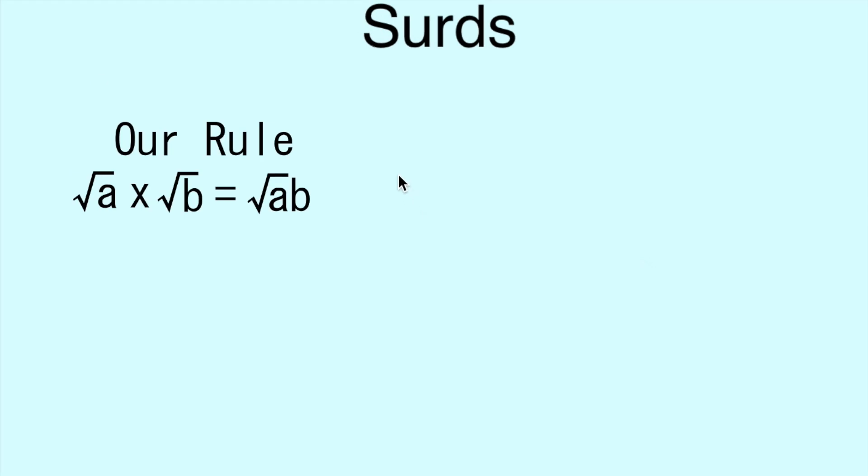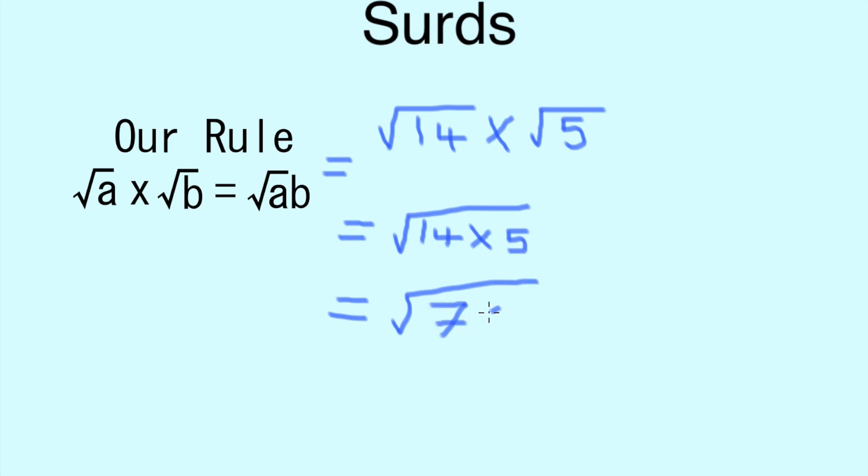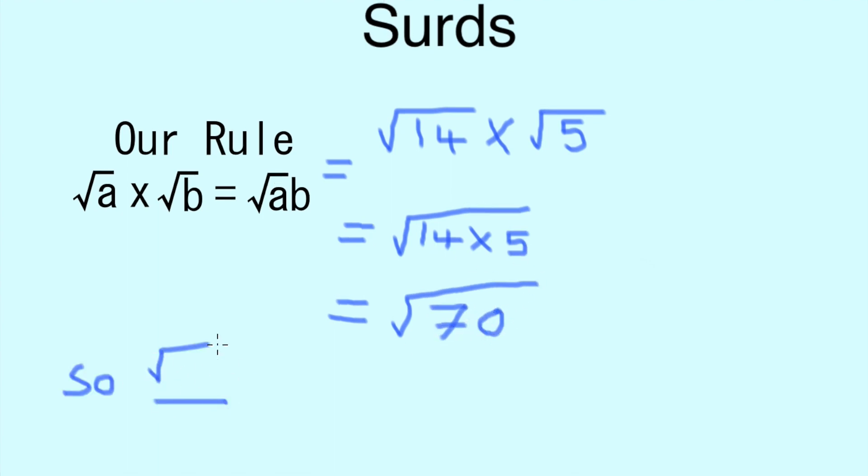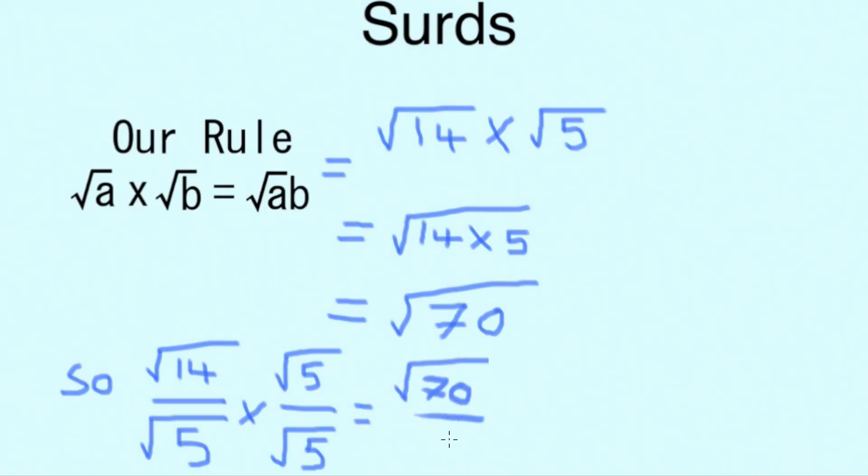To simplify this even further, we remember that √a times √b is the same as √(ab). So continuing on with our example, √14 times √5 equals √(14×5), or simply √70. So bringing everything together, √14 over √5 times √5 over √5 equals √70 over 5.